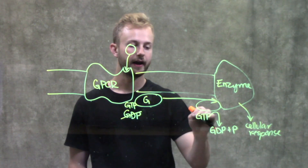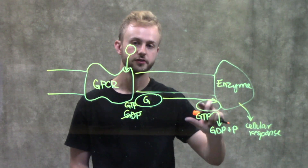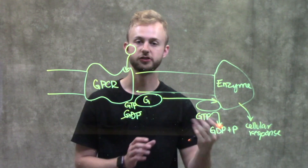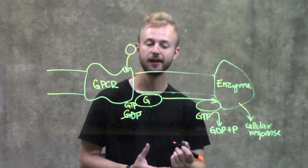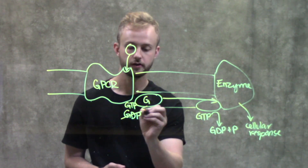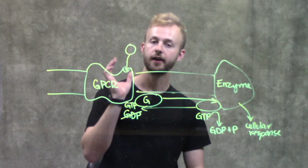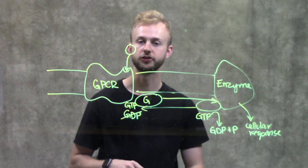After the G-protein has hydrolyzed GTP to GDP, it's now back in its inactive form and will diffuse back across the membrane to the GPCR to wait for another round of activation.